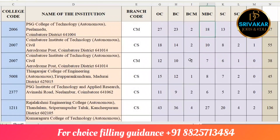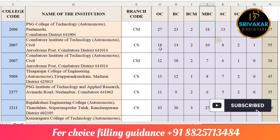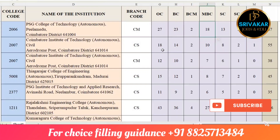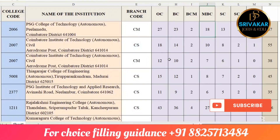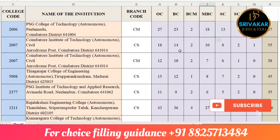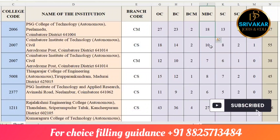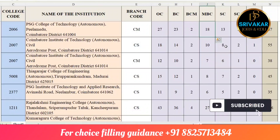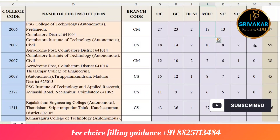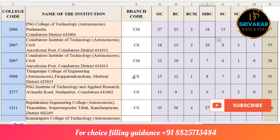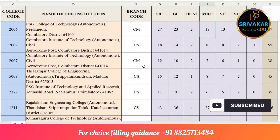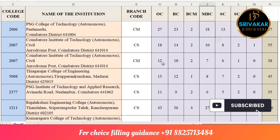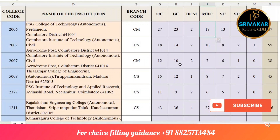Analyzing PSG Institute of Technology: self-supported and government quota — OC is 18, BC is 14, BCM is 2, MBC is 10, SC is 8, SCA is 2, ST is 1.